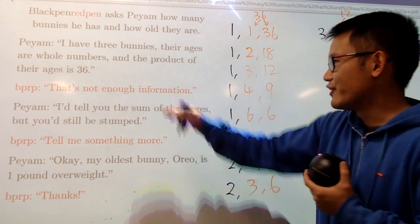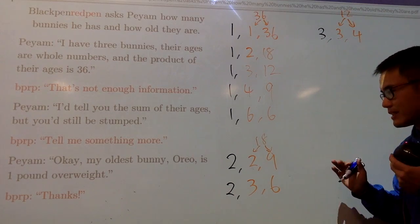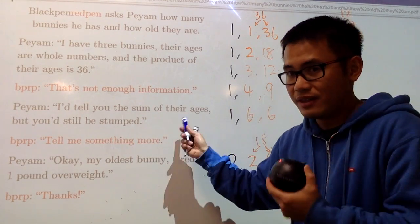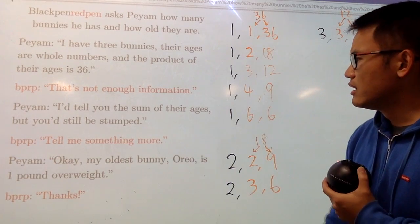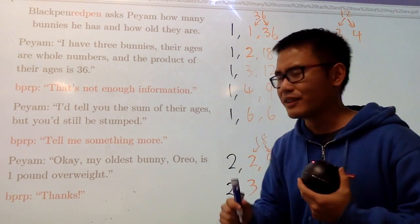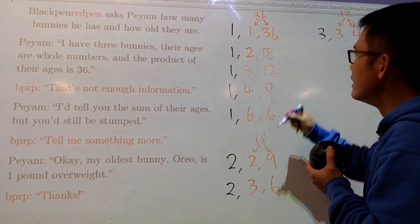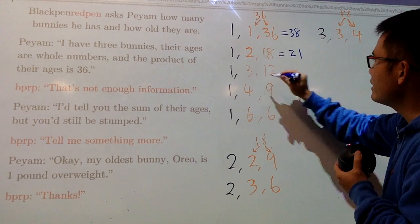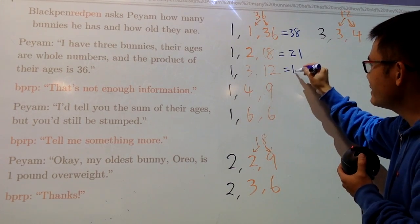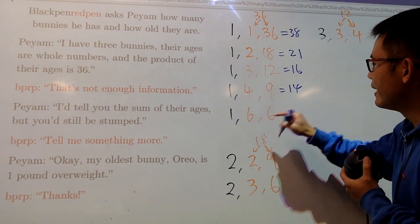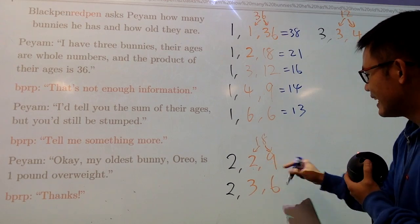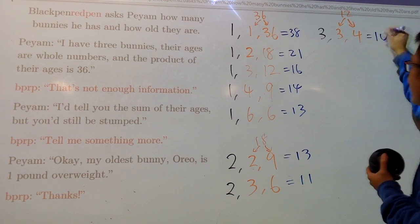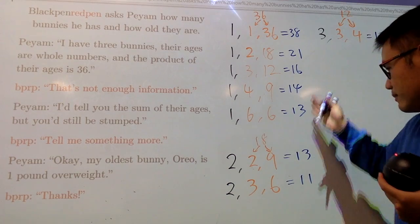So, we used this already. But it's not enough information, because we have a lot of combinations. Well, next, Payan told me, he would tell me the sum of the ages, but even though if he does that, I will still be stumped. Let's see why. Sum of the ages, he didn't mention that though, so let's take a look at the sum of all these things. I'm going to add them up. 1 plus 1 plus 36, that's 38. 1 plus 2 plus 18, this is 21. 1 plus 3 is 4 plus that is 16. And then, 1 plus 9 is 10 plus that is 14. And then, 1 plus this is going to be 13. And then, this that is going to be 11 plus that is 13. And then, this that is going to be 11. And then, finally, this that is going to be 10. So, the blue numbers are the sum of the ages.